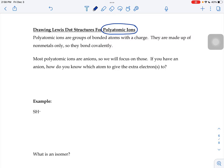Most polyatomic ions are going to be anions, so those are the ones we're going to focus on. If you have an anion, negatively charged, how do you know which atom in the structure to give that extra electron to? You're going to give it to the element with the higher electronegativity, because it would be able to attract that extra electron better than the other element.